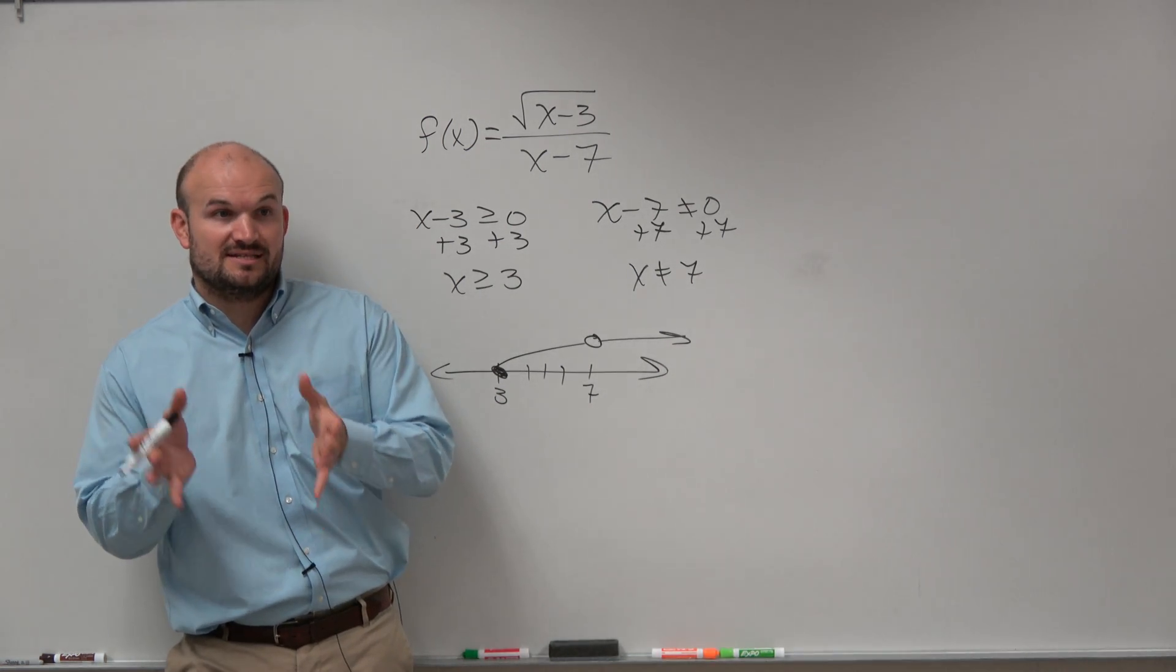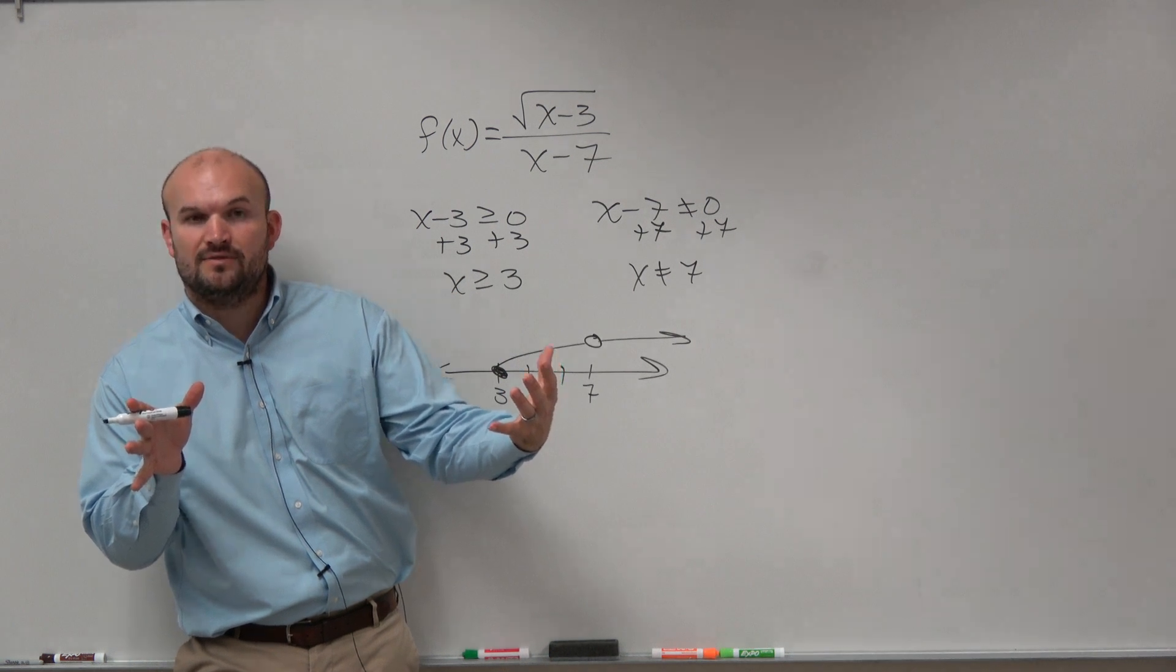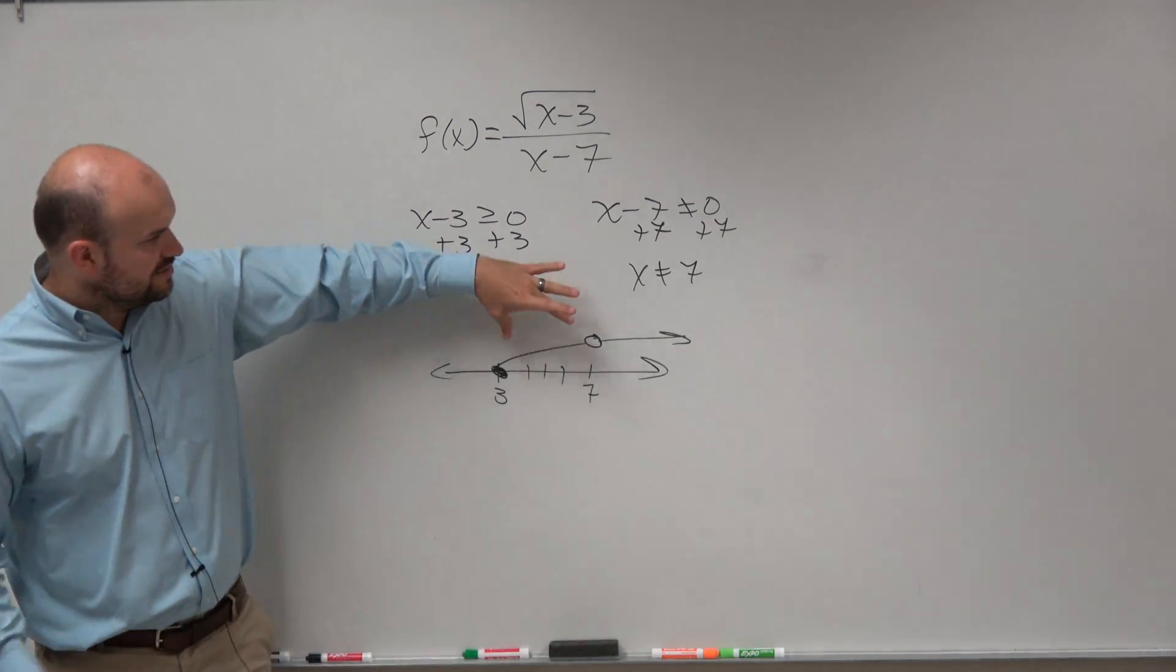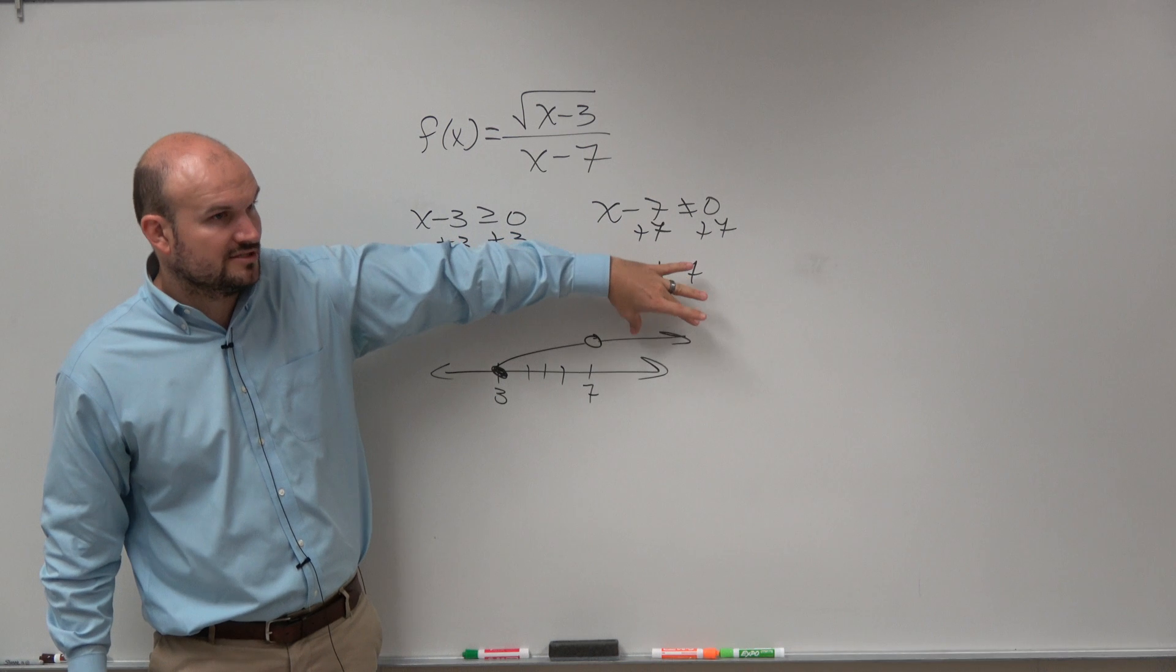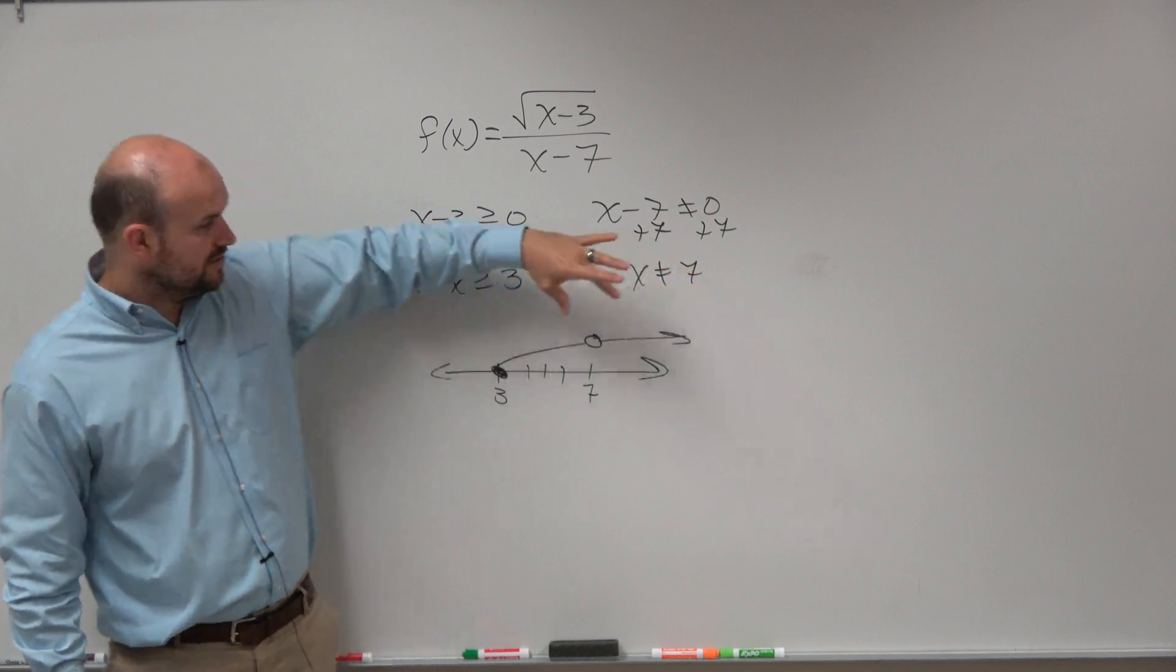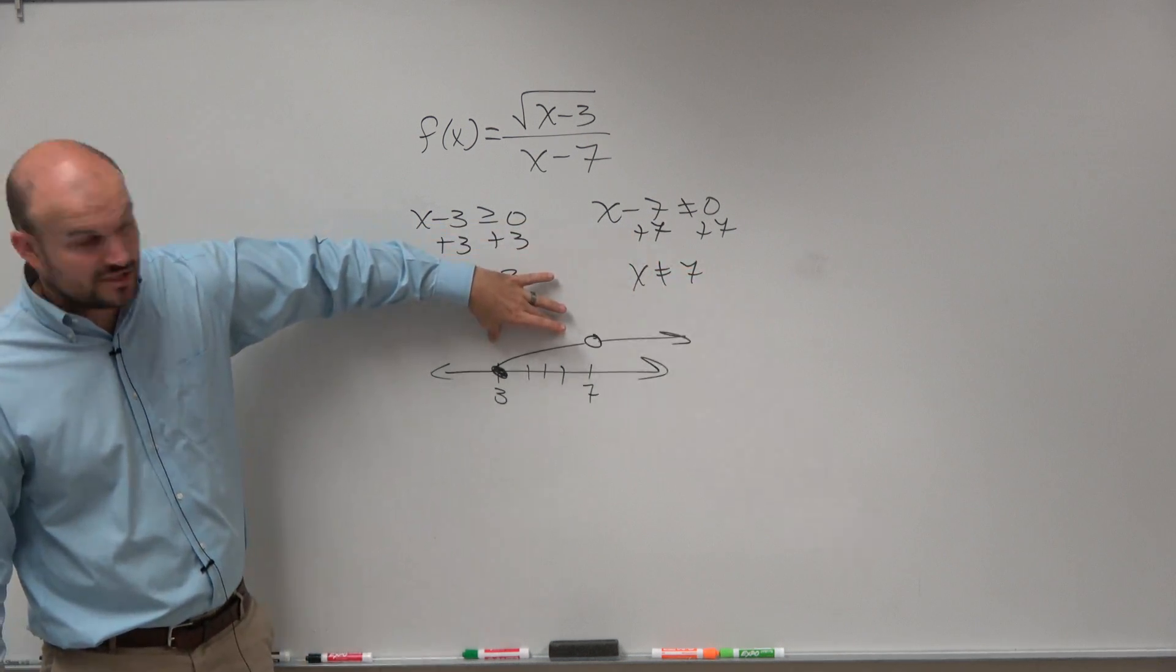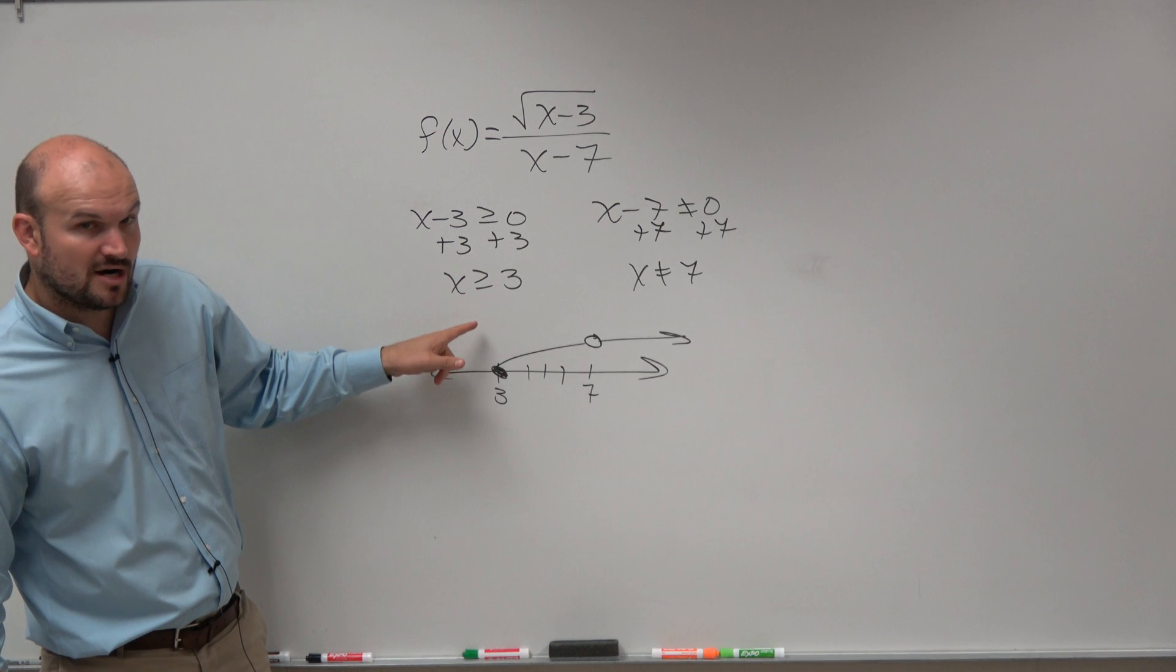So how we write our domain is kind of like how we did in those rational ones. You want to write the domain from the left, and then you want to write the domain to the right of it. So the first one to left, you need to do smallest and largest. So the smallest value we have that's a part of our domain is 3.